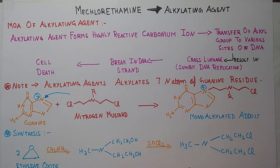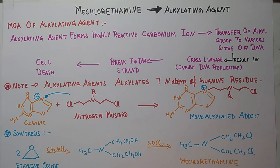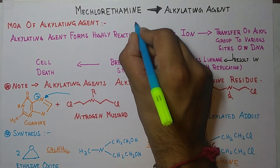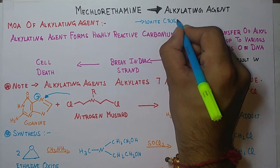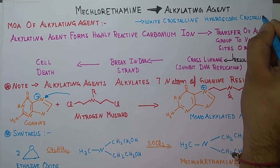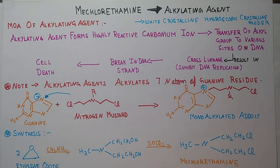This is the structure of Mechlorethamine. The IUPAC name is 2,2-dichloro-N-methyldiethylamine. It is a white crystalline hygroscopic powder. The major adverse effect of this drug is bone marrow depression.